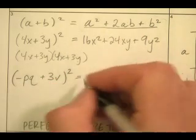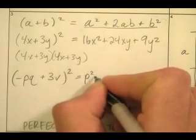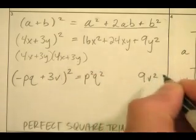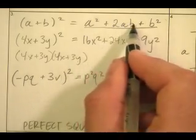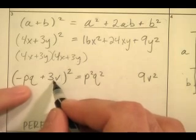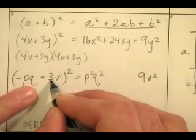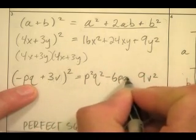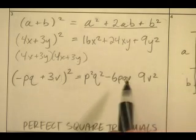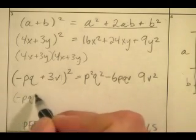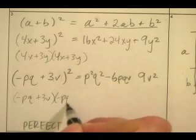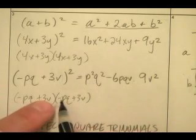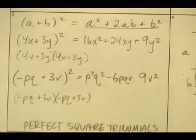Let's use the pattern again. For (-pq+3v)²: the first term squared is p²q², the last term squared is 9v². The middle term is double the product of -pq and 3v: -pq times 3v is -3pqv, doubled is -6pqv. Verify: (-pq+3v)(-pq+3v) gives p²q squared, 9v squared, and -3pqv minus 3pqv equals -6pqv. Correct.